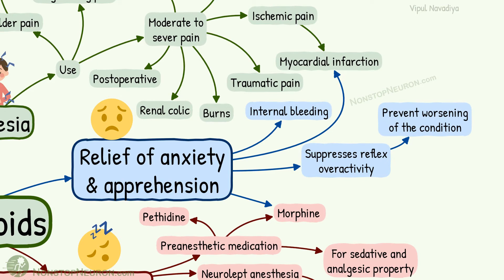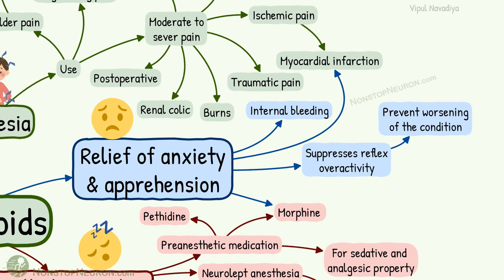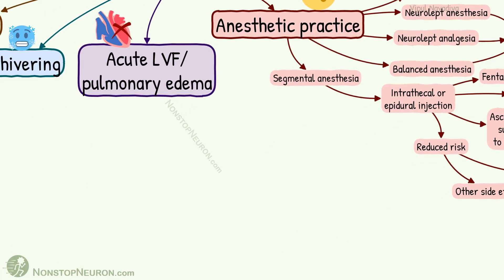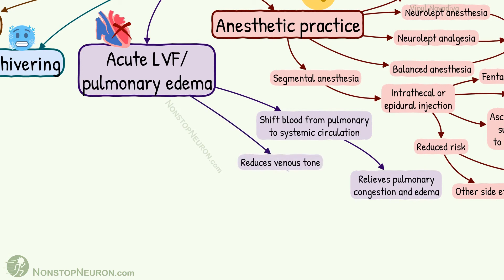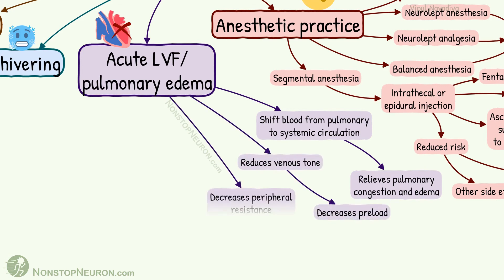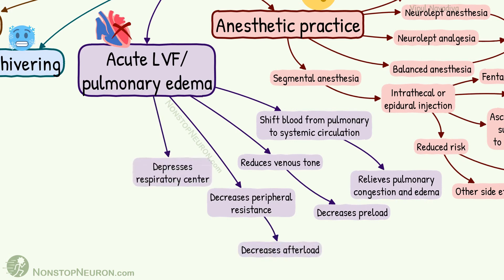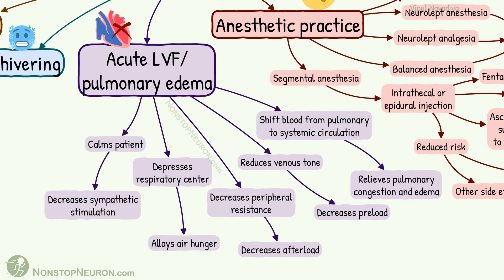Moving outside the CNS: use in acute left ventricular failure or pulmonary edema. Again, morphine is used. It shifts blood from pulmonary to systemic circulation, which relieves pulmonary congestion and edema. It reduces venous tone, which decreases preload. Decrease in peripheral resistance decreases afterload. Depression of the respiratory center relieves air hunger. It calms the patient, which decreases sympathetic stimulation and decreases cardiac work.